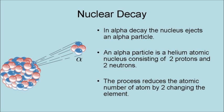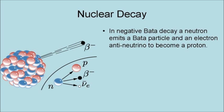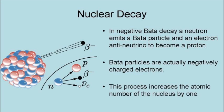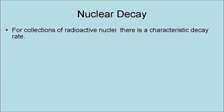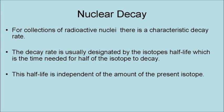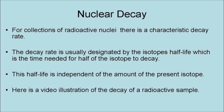Alpha decay reduces the atomic number of the atom by two, changing the element. In negative beta decay, a neutron emits a beta particle and an electron-anti-neutrino to become a proton. Beta particles are actually negatively charged electrons. This process increases the atomic number of the nucleus by one, turning it into a different element. For collections of radioactive nuclei, there is a characteristic decay rate. The decay rate is usually designated by the isotope's half-life, which is the time needed for half of the isotope to decay. This half-life is independent of the amount of the parent isotope. Here is a video illustration of the decay of a radioactive sample.